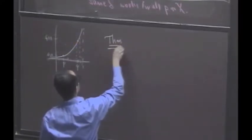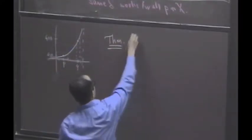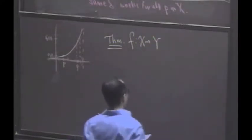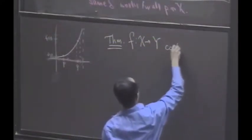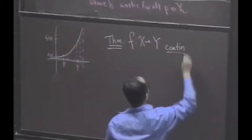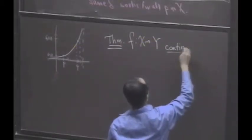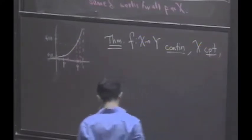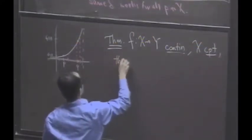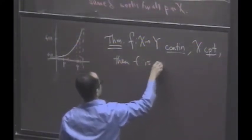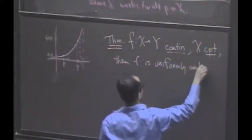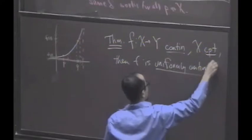So here's our first theorem, one of the most important theorems about continuity, and that is if you have a continuous function on a compact set, then in fact F is uniformly continuous on X.